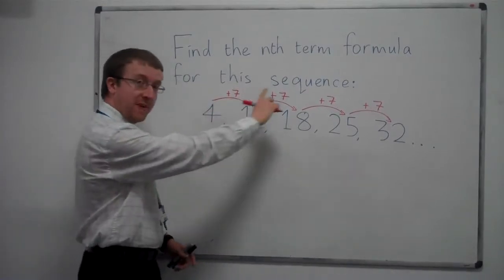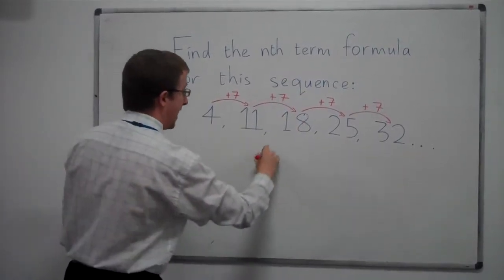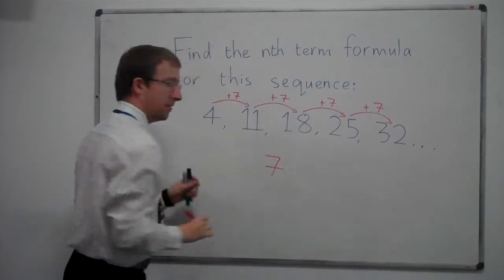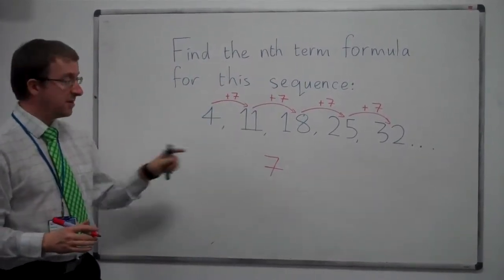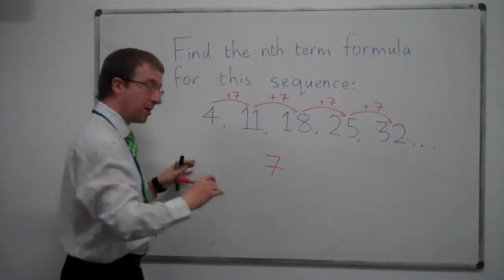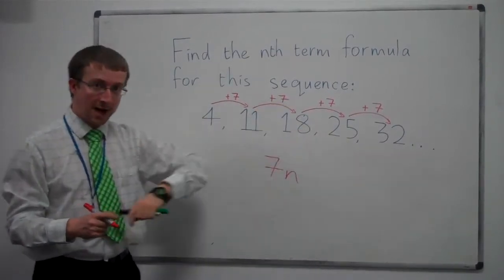So it's pretty clear that that 7 is going to be really important for the sequence. What you'll do, once you've found out what you're adding on each time, write that number down. And then we're finding an nth term formula, so we need the letter n. That letter n goes straight after that value that we're adding on each time.